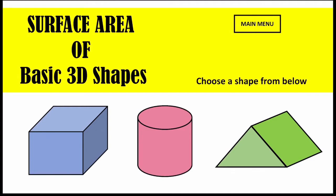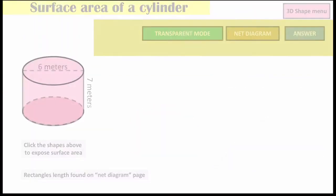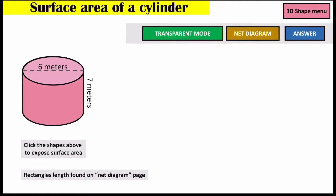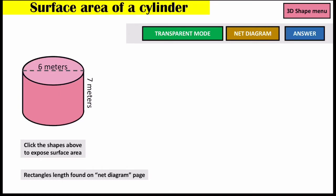We are now taking a look at the surface area of a cylinder. Cylinders are interesting — they have two circles, the top and the bottom, and then this shape wrapping around the cylinder. The nice thing about that is it's actually simpler than it looks, because you can unwrap this shape.